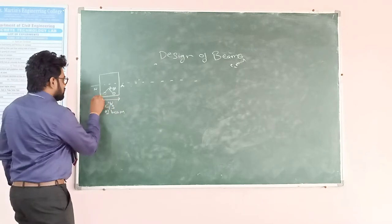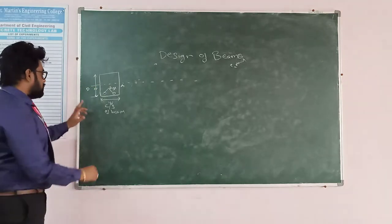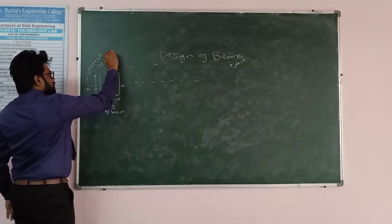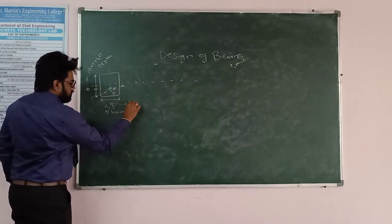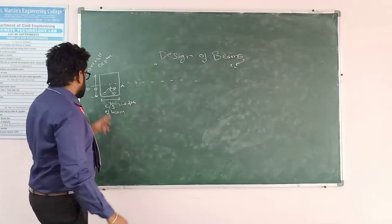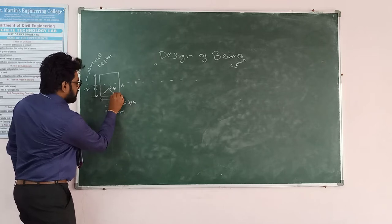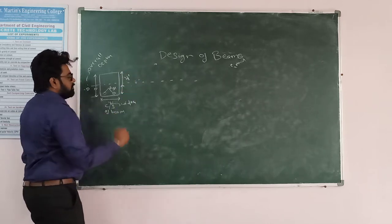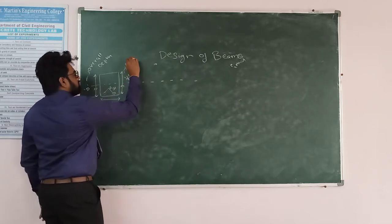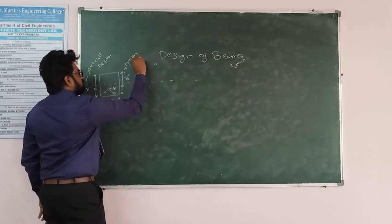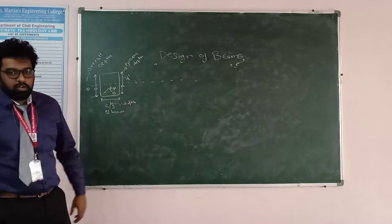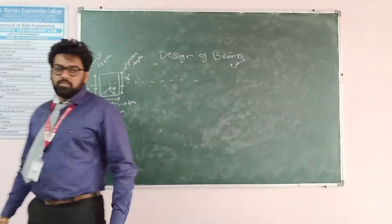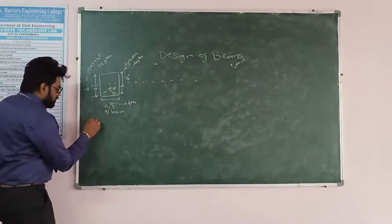The cross-section dimensions are B (width of the beam) and D (depth of the beam). The reinforcement is denoted as AST, which is the area of steel. The distance from the center of the reinforcement to the topmost fiber is the small d, which is the effective depth. The first assumption is that plane sections remain plane before and after bending.